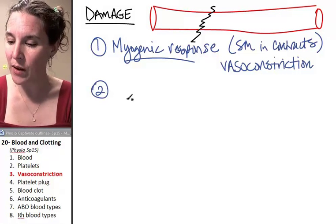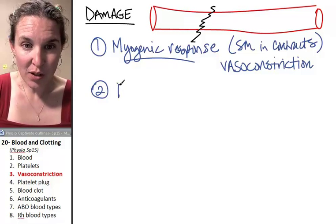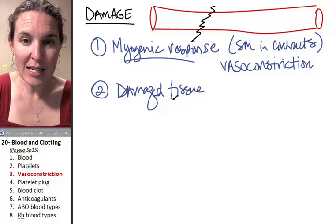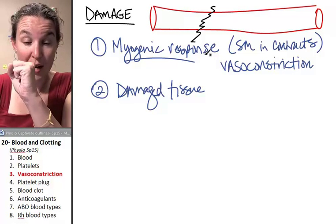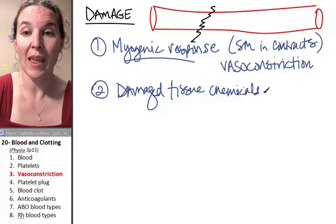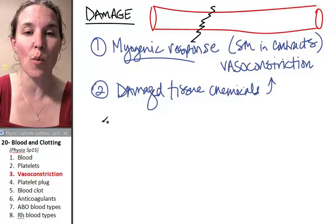In addition, you end up with the damaged tissue. In addition to the smooth muscle response to contract, the damaged tissue produces chemicals that increase vasoconstriction. So they just contribute to the whole process.